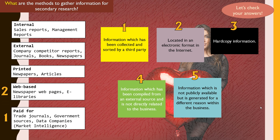Item two, located in an electronic format on the internet, is basically web-based materials like newspaper web pages and e-libraries. Item three is straightforward — hard copy information, or printed materials. Item four is information compiled from an external source not directly related to the business — it could be from anywhere in the world, but you're gathering it to help in your own research.